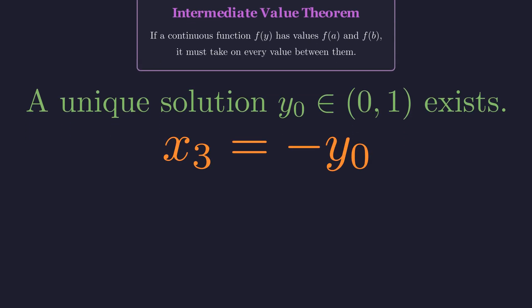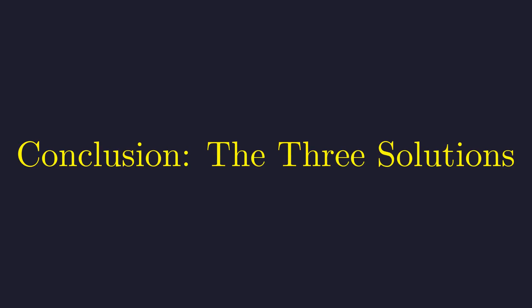Since x equals negative y, this gives us a third solution, x3 equals negative y naught. So, after a complete analysis, we've discovered that our equation has not two but three distinct real solutions.